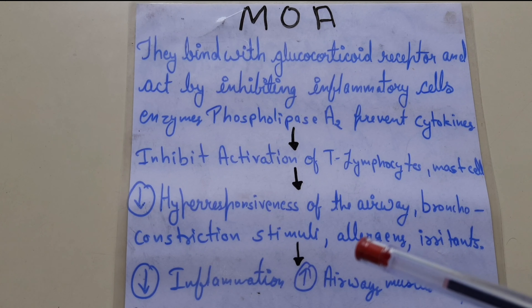Uses of corticosteroids include rheumatoid arthritis, ulcerative colitis, Crohn's disease, dermatitis, and conjunctivitis. Crohn's disease involves inflammation in bowel secretion, while conjunctivitis and dermatitis are inflammatory and allergic reactions.